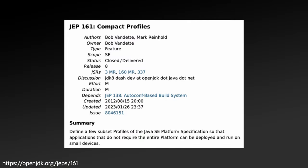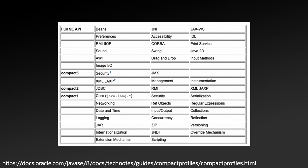One attempt at resolving this issue was the creation of compact profiles with JEP 161 and JDK 8, which would create profiles that were subsets of the Java SE platform, primarily aimed at allowing Java to run on small devices. What was delivered were three compact profile runtimes, each building upon the former, and then the standard runtime profile that provided access to the full Java SE API.